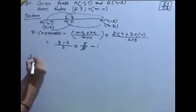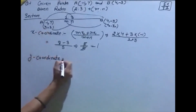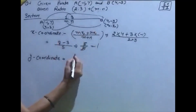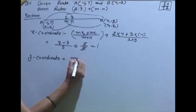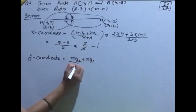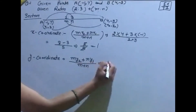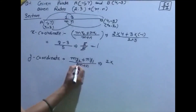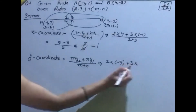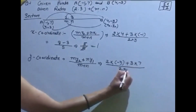अब y-coordinate निकालेंगे। y-coordinate में y के elements से multiply करेंगे। Section formula: y = (m·y₂ + n·y₁) / (m + n)। Values put करेंगे: m = 2, y₂ = -3, n = 3, y₁ = 7, divided by 2 + 3।